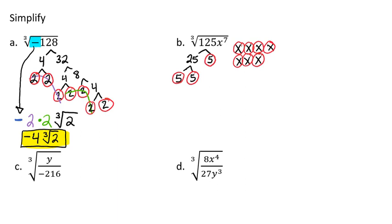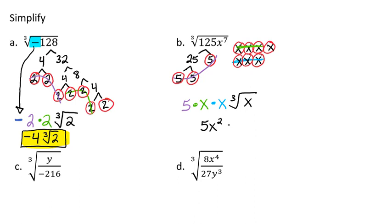Now we're ready to look for groups of 3. Looking at my numbers, I see a group of 3 fives, so a 5 comes out. Moving on to my x's, I see a group of 3 here — I'll bring out one x. And I see another group of 3 here — I'll bring out another x. But I have that lone x left, so I'm going to have a cubed root of x that stays inside. My final answer is 5x squared times the cubed root of x.